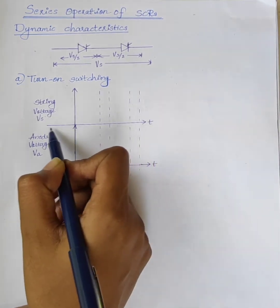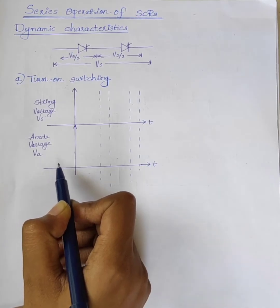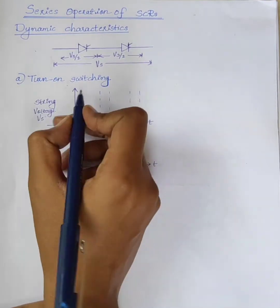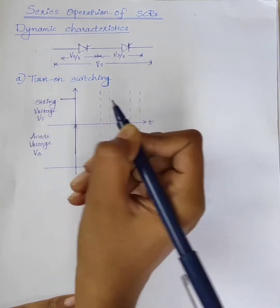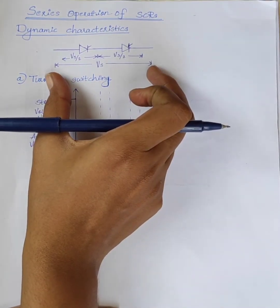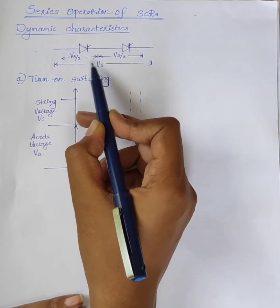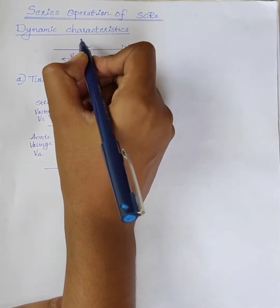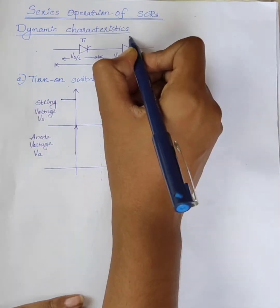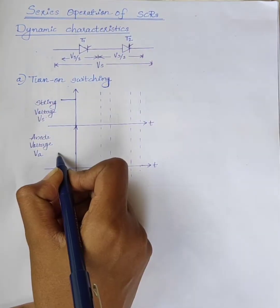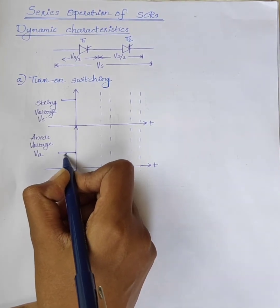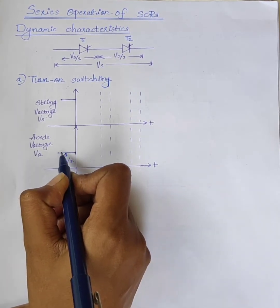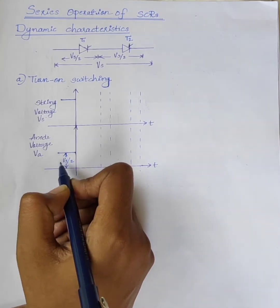When T less than 0, the switch is in the off state. Therefore the voltage across the string is equal to Vs, and it acts as an open switch. The string voltage Vs is shared by each SSR, so voltage shared by T1 is Vs/2 and T2 is Vs/2. Both T1 and T2 share the same voltage Vs/2.